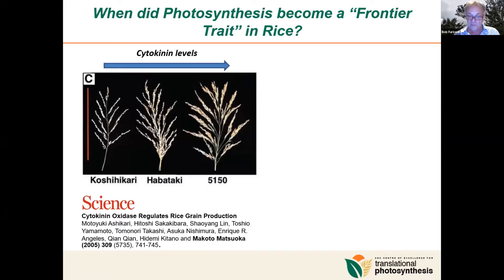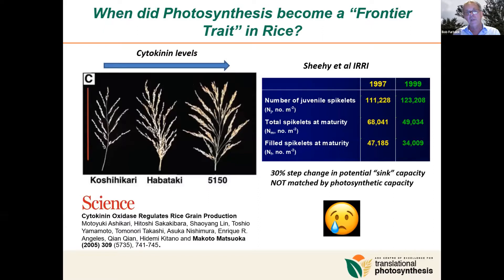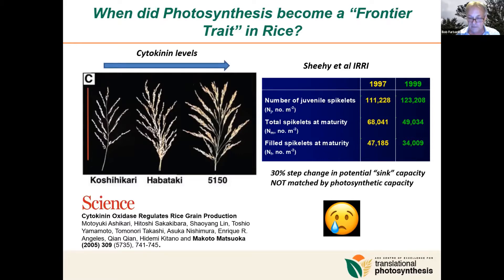This did improve rice yields, but not for very long. John Sheehy, at the time a modeler and breeder at IRRI, found that in many of these so-called new rice idiotypes, even though there was a 30% increase in their potential sink capacity, it wasn't matched by photosynthetic capacity. The carbon fixed from photosynthesis was diluted between those seeds, and yield was actually less because of abortion of seeds and lack of pollination. This drove breeders in rice to start looking at photosynthesis as a frontier trait for improving yield far earlier than we saw in wheat and other cereal crops.